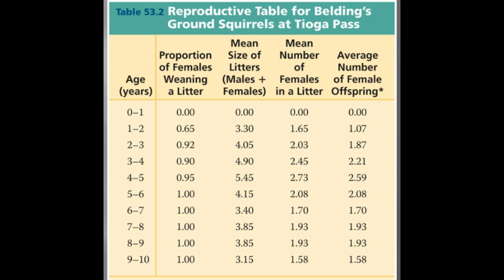For species with sexual reproduction, demographers often concentrate on the females in a population. A reproductive table, or fertility schedule, is an age-specific summary of the reproductive rates in a population, and it describes the reproductive patterns of a population. Write that down.